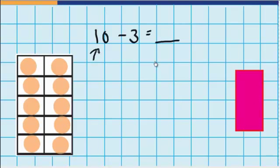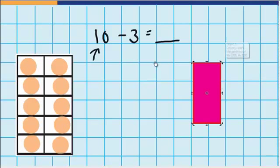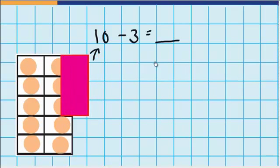Now the question says that I lose 3. So I'm going to need to cover up 3 of these counters. So have a think about what that would look like in your head. Now I'm going to use this rectangle to help me show that. So I'm covering up 3 counters.